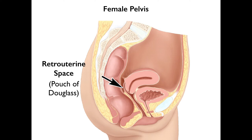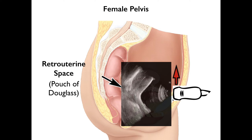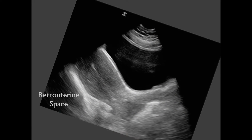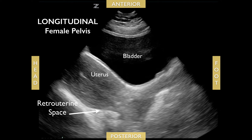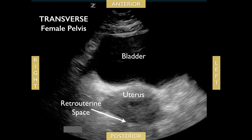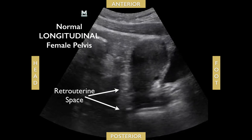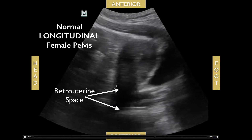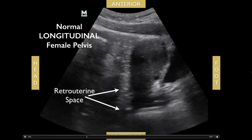For females, you're going to look at the retro-uterine space or the pouch of Douglas. With the indicator towards the patient's head for the longitudinal view, you'll see the bladder and uterus. Focus on that retro-uterine space posterior to the uterus. In a transverse view you look for fluid right behind or underneath the uterus. This is a normal patient with no free fluid.